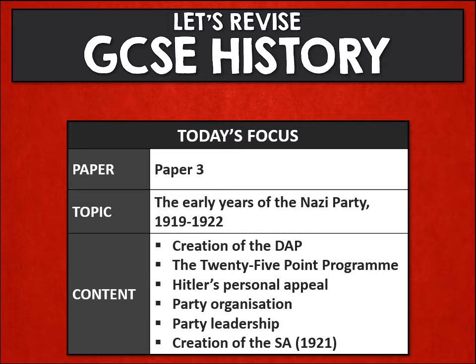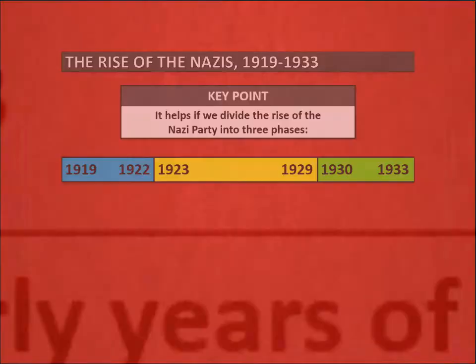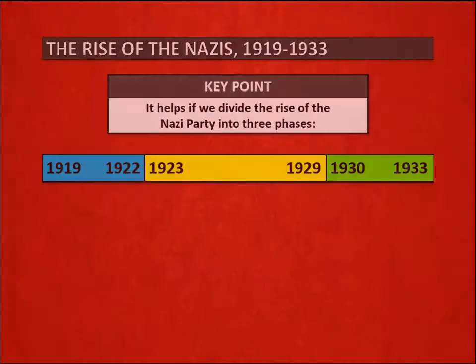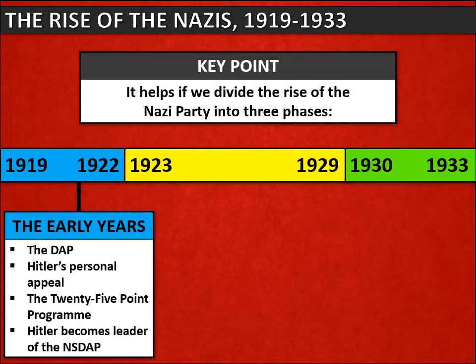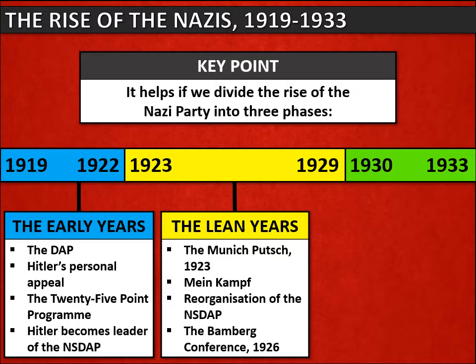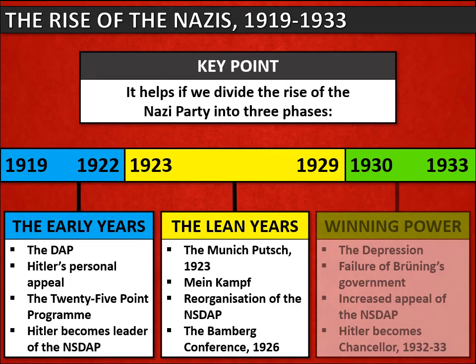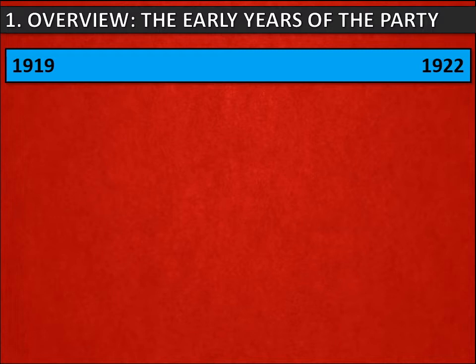Welcome back to another GCSE history revision tutorial. Today we are going to focus on the early years of the Nazi party. When looking at the rise of the Nazis, it helps to divide it into three phases. This tutorial covers 1919 to 1922, the early years. Another tutorial covers the lean years 1923 to 1929, and another covers 1930 to 1933 when the Nazis win power.